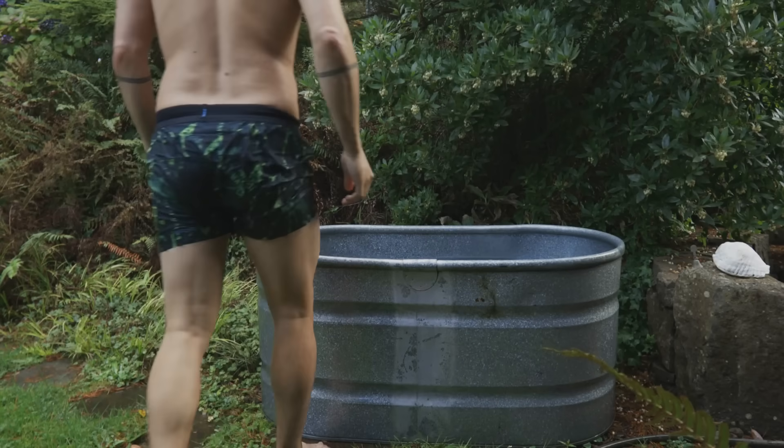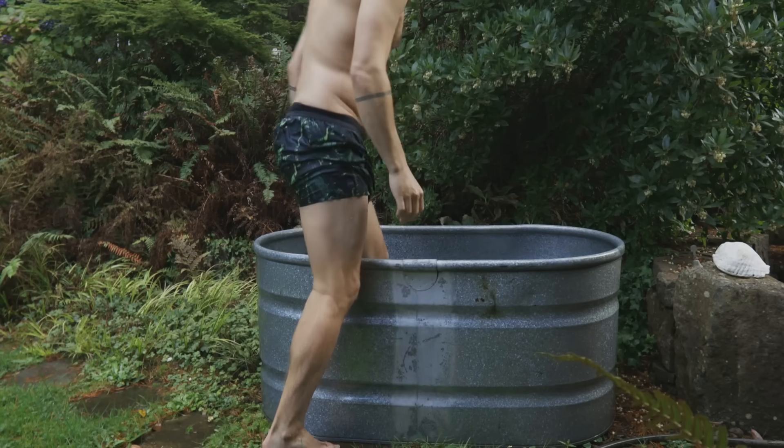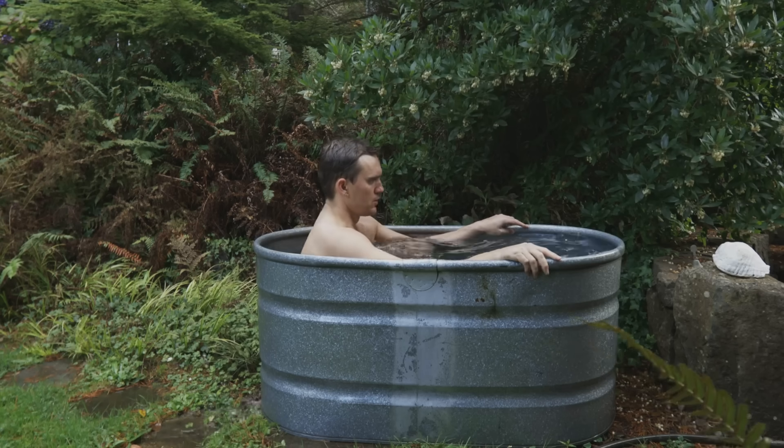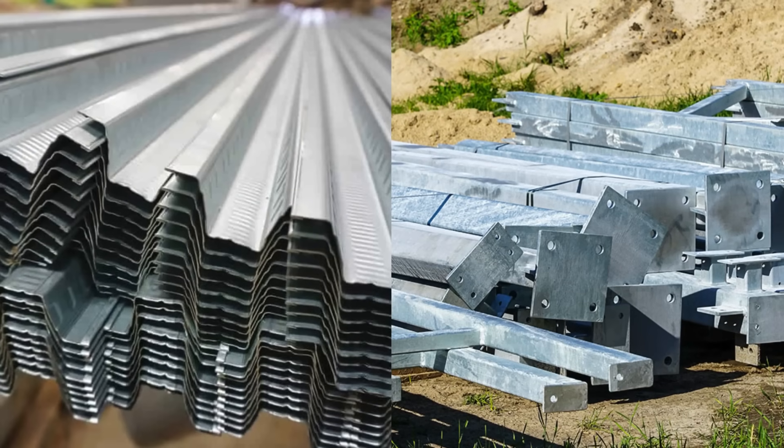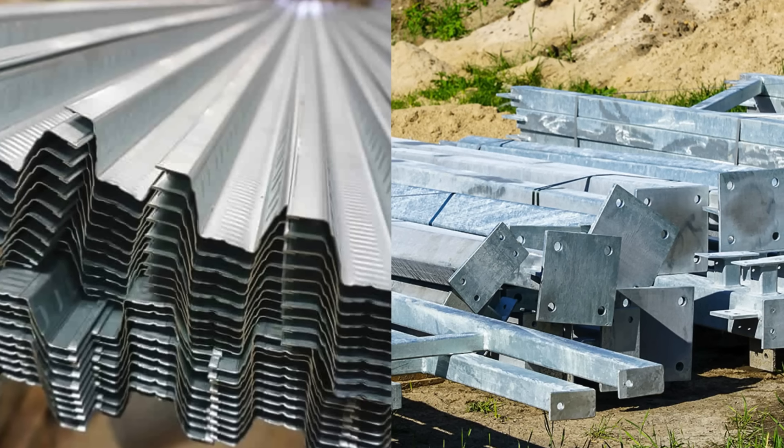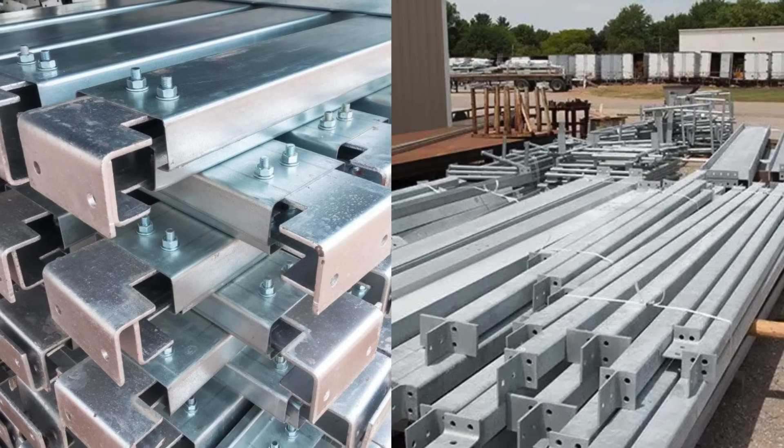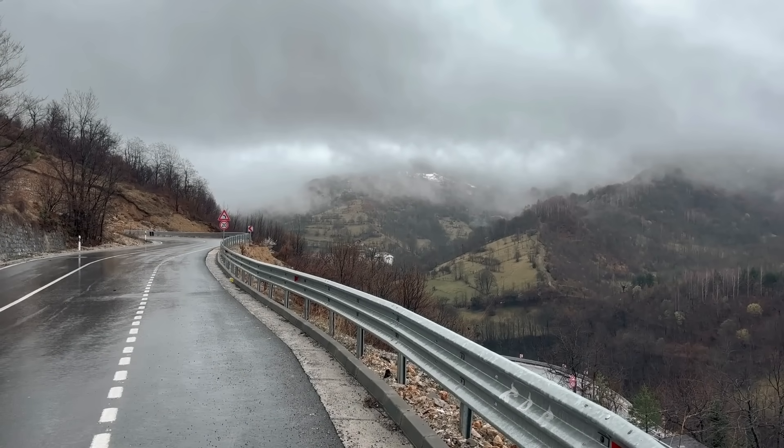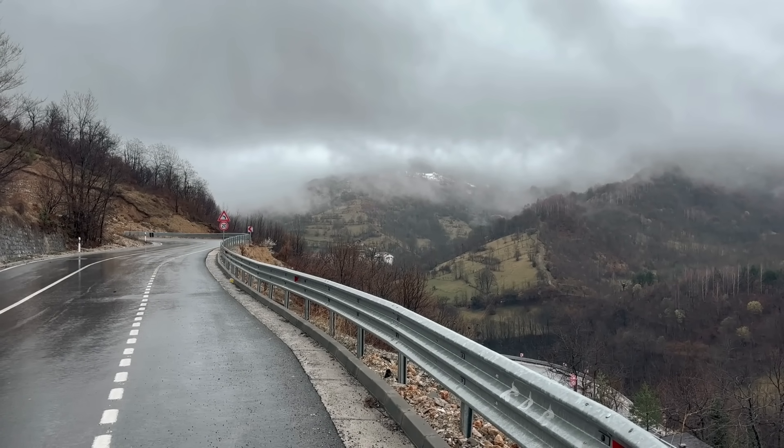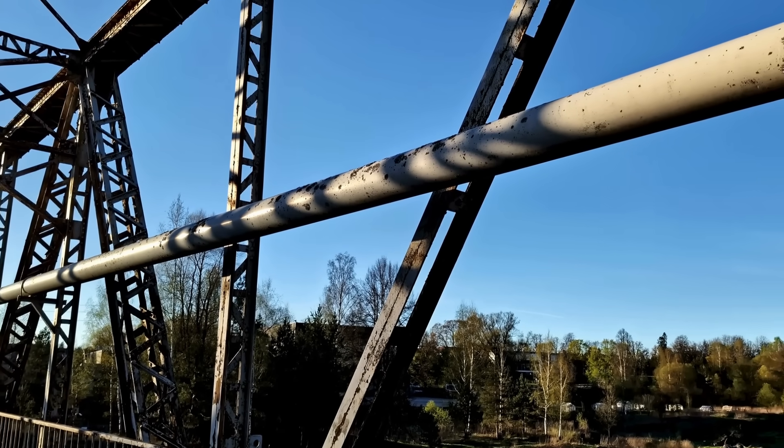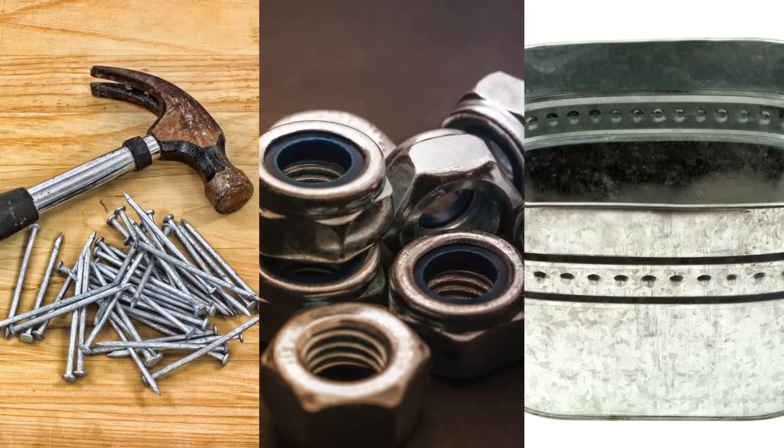If you're wondering where we actually use galvanized metal, the list might surprise you because it's practically everywhere. In construction, galvanized steel is used for roofing sheets, building frames, ductwork, fences, structural beams, and support columns. In infrastructure, it's found in highway guardrails, utility poles, bridges, drainage systems, and street furniture.